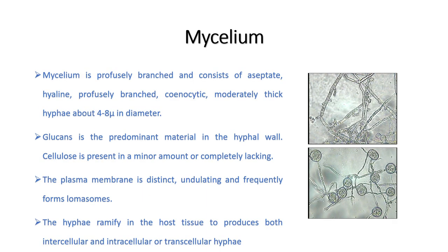The mycelium of this fungus is profusely branched and aseptate — coenocytic. You can see this in the electron micrograph. There is no formation of septa, and all the cell organelles are present within the same cell. Such a structure is known as coenocytic. Formation of septa generally takes place only at the time of formation of reproductive structures.